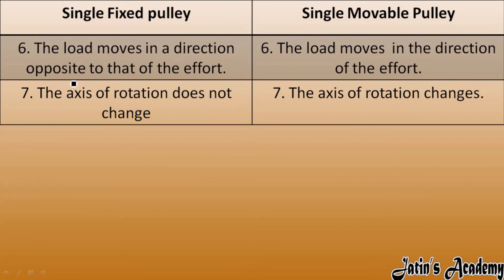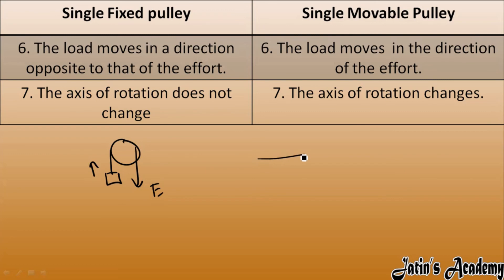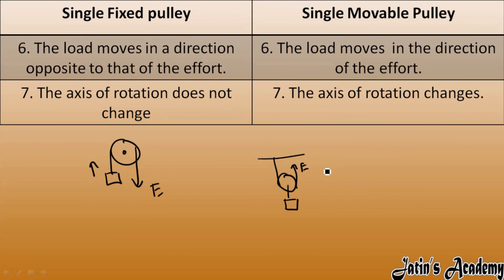In a single fixed pulley, the load moves in the direction opposite to that of effort — effort is applied downward and the load is raised upward. But in a single movable pulley, effort is applied upward and the load also moves upward, so the load moves in the same direction as the effort. Finally, in a single fixed pulley the axis of rotation does not change, but in a single movable pulley the axis of rotation changes.